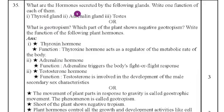Question number 35. What are the hormones secreted by the following glands? Write one function of each of them. Thyroid gland, adrenalin gland and testes. And what is the geotropism? Which part of the plant shows negative geotropism? Write the function of the plant hormones. Thyroxine hormone will secrete thyroxine. Hormone acts as a regulator of the metabolic rate of the body. Adrenaline gland, it secretes adrenaline hormone. And function of adrenaline hormone is adrenaline triggers the body fight or flight response. That means emergency hormone. And then the testes will secrete testosterone hormone. Testosterone is involved in the development of the male secondary sex characteristics.